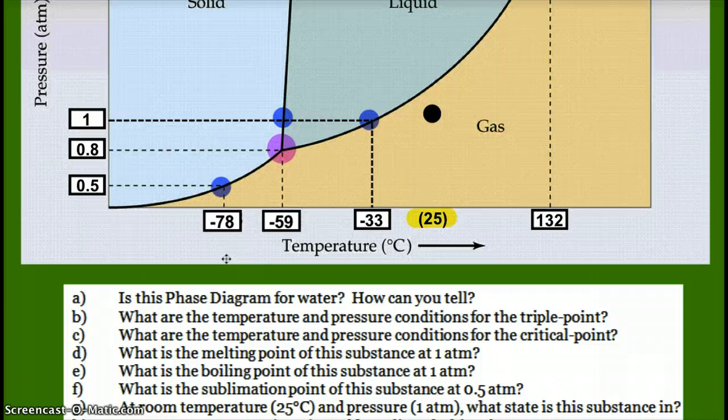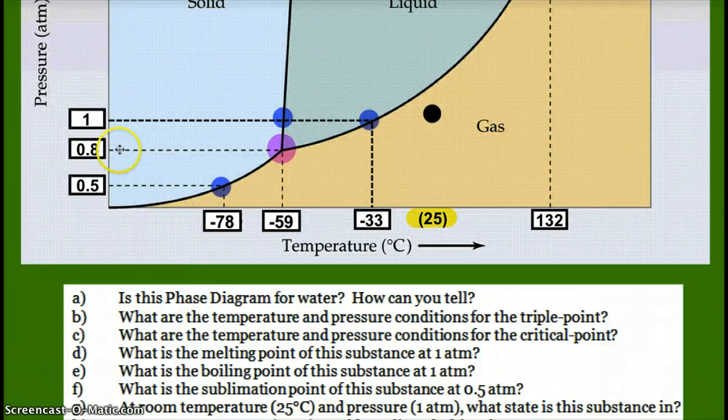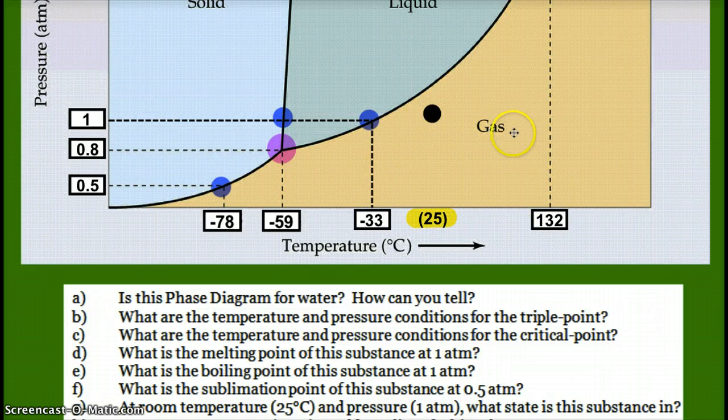At room temperature, 25 degrees Celsius, and pressure, 1 atmosphere, what state is this substance? So, 1 atmosphere, and you could see 25 would be somewhere over here. But this substance would definitely be a gaseous substance.